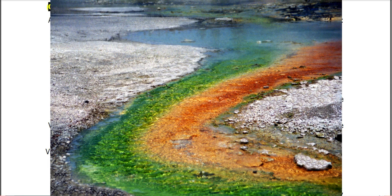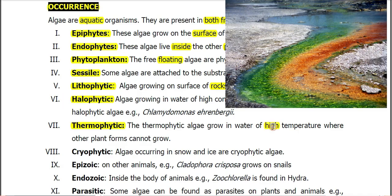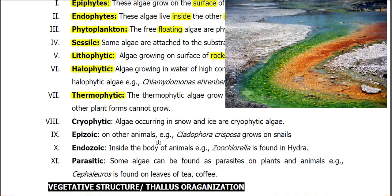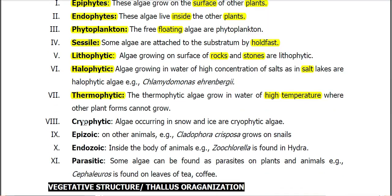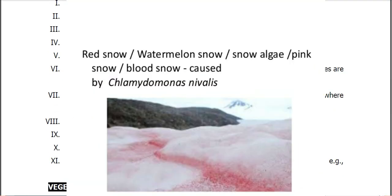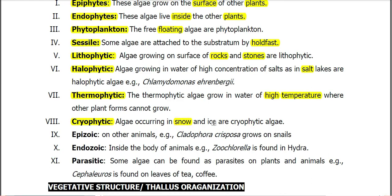Thermophytic algae, as the name indicates, grow in water with high temperatures, such as in hot springs. Cryophytic algae is the type of algae that grow in snow and in icy conditions.